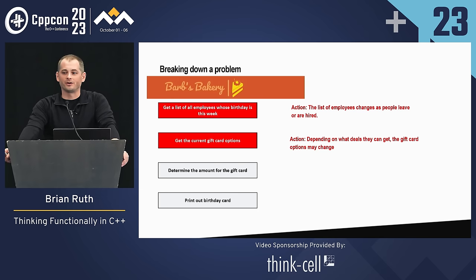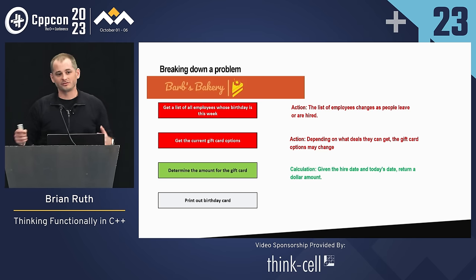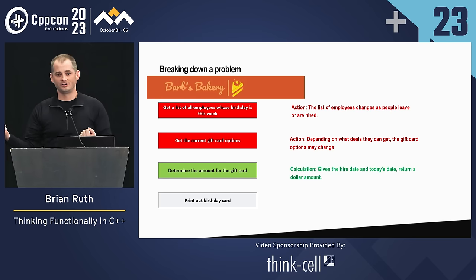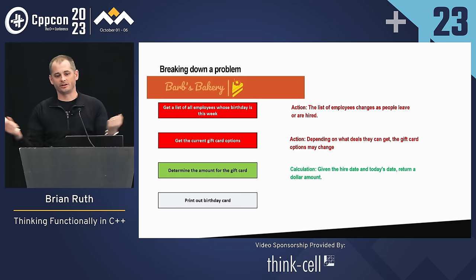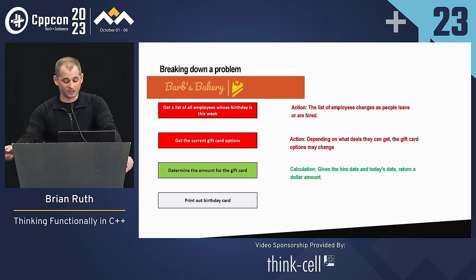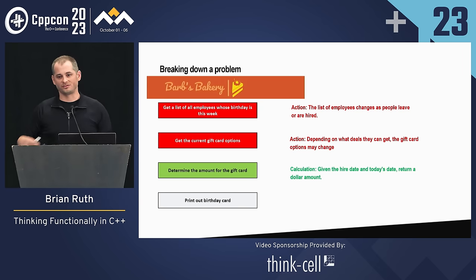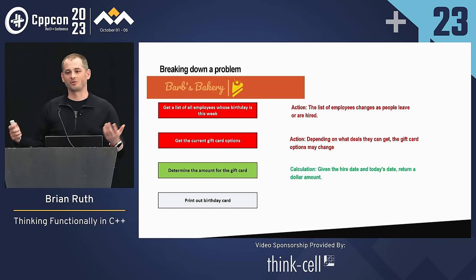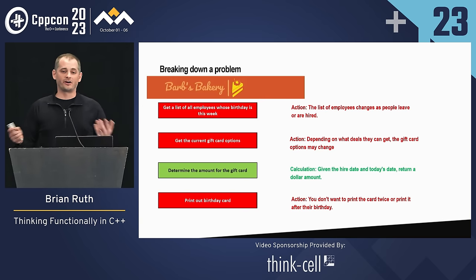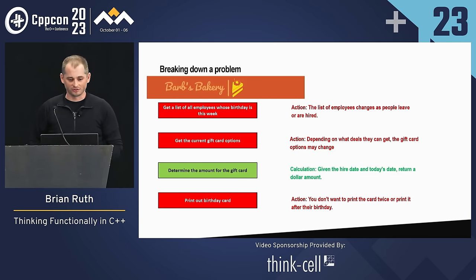How about determining the gift card amount? That's a calculation. Basically, given a date, a range of dates, and a dollar amount, calculate something — for any given date, range, and dollar amount, it will give you the same value every single time. And printing out a birthday card is an action — that's printing out something physical. We don't want to print out multiple cards for the same person or print it out too late, so it matters both when and how many times you do that.